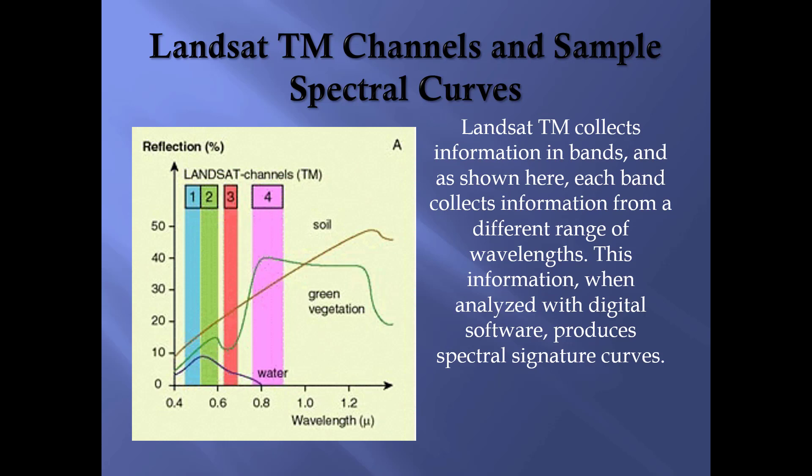Here's an example of Landsat TM channels and sample spectral curves. Four bands are represented — one, two, three, and four — which are channels on the Landsat TM satellite. It collects information in bands, and each band collects information from a different range of wavelengths. This information, when analyzed with digital software, produces the spectral signature curves.